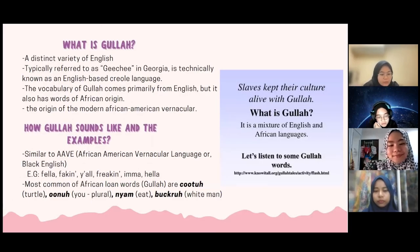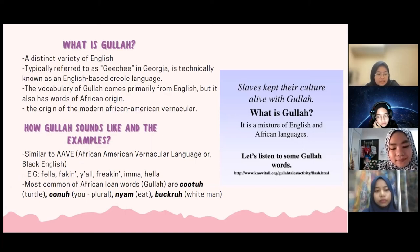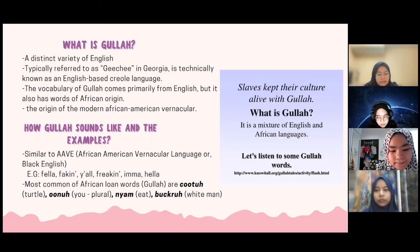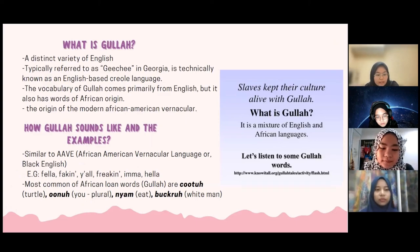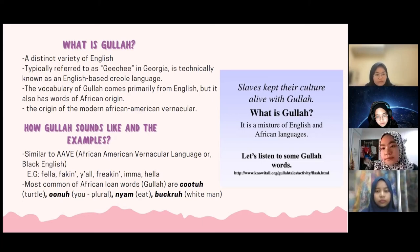So, what is Gullah? Gullah is the mixture of African and English language. Gullah is a very distinct variety of English which originates from South Carolina Island. In other words, the Gullah language is typically referred to as Geechee in Georgia. It is technically known as an English-based Creole language, created when people from diverse backgrounds find themselves thrown together in a situation that requires them to communicate. Gullah is very similar to AAVE, or African-American vernacular language, also known as Black English.